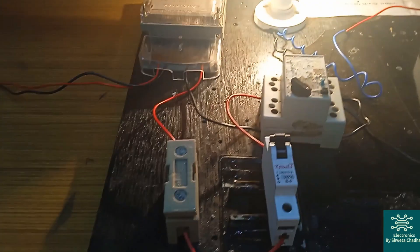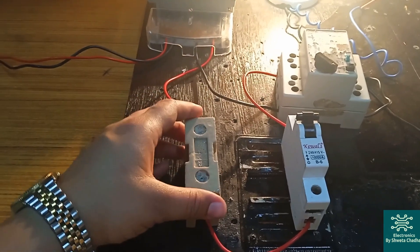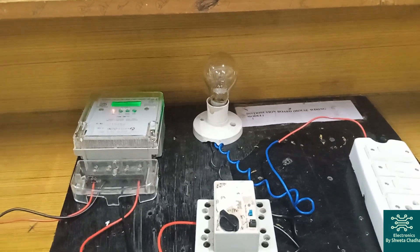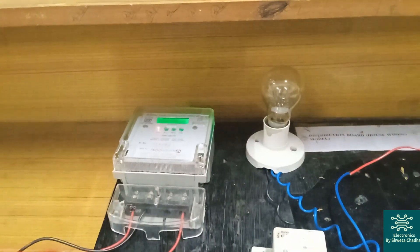And the last is fuse. The fuse wire is going to melt down when we have a high amount of current flowing in our circuit. So this is how it will again become an open circuit. So this is our distribution board or domestic wiring.